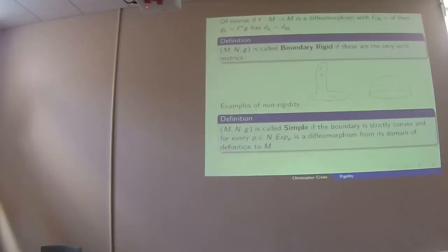It turns out this is an edge case. If you pull in just slightly — look at a spherical cap that's a little smaller than the hemisphere — that will be boundary rigid. But hemispheres are not. So that means we have to describe a class of metrics that might possibly be boundary rigid.